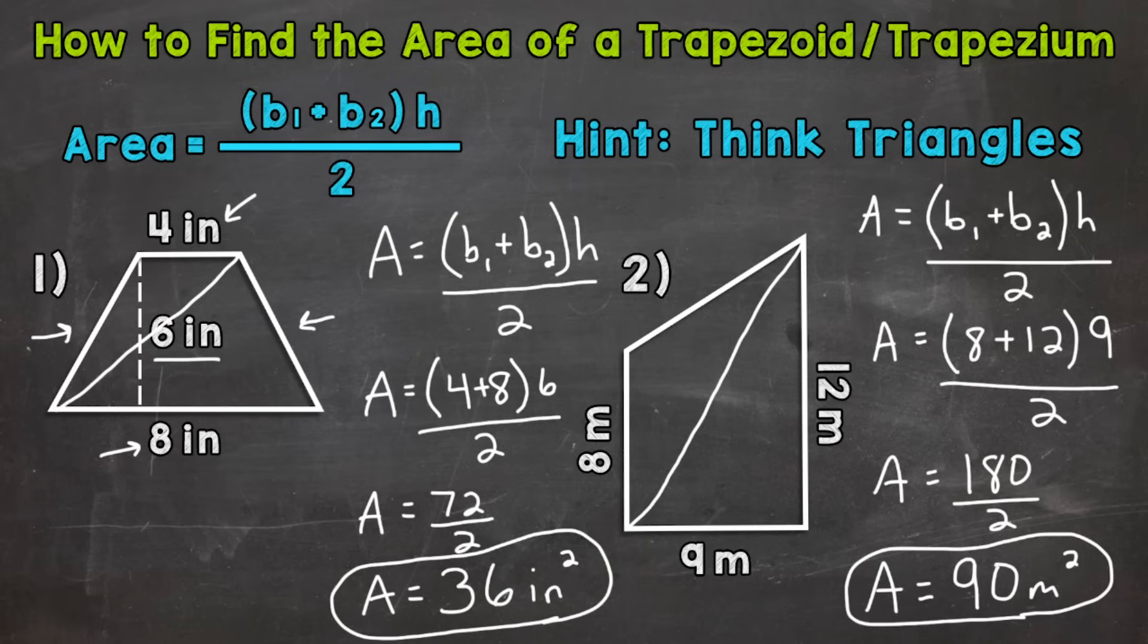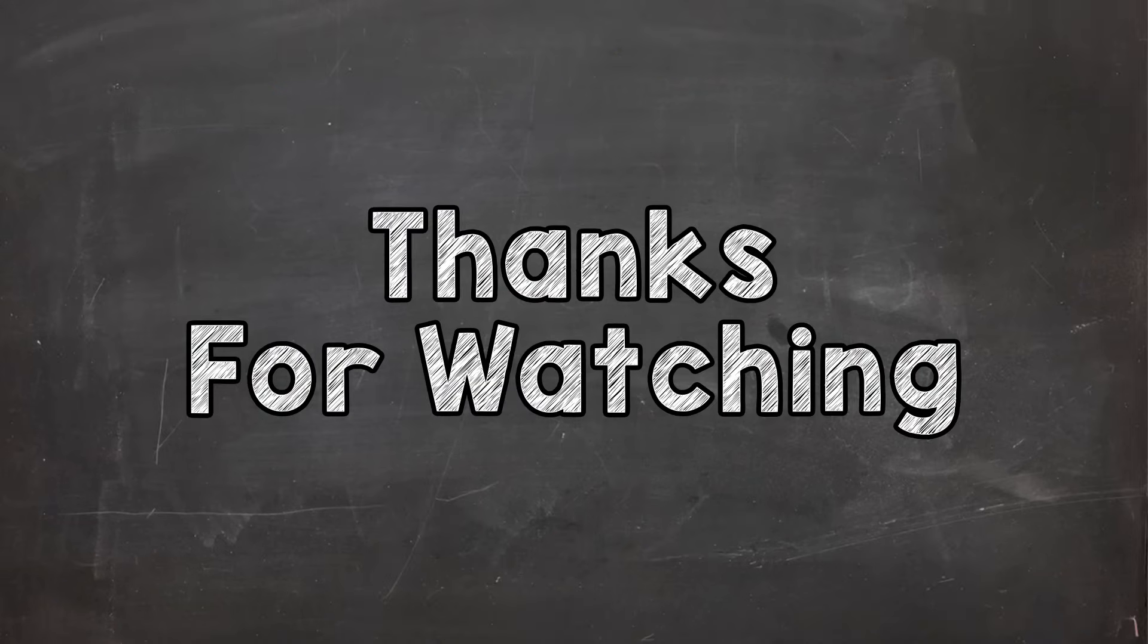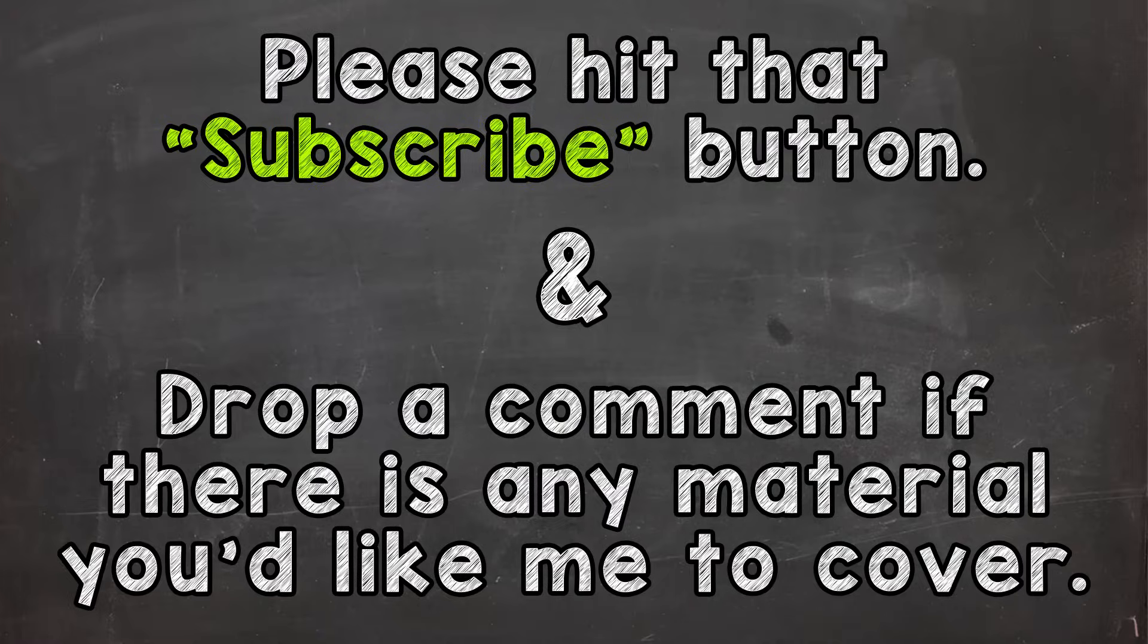Now, again, you can go from the top left to bottom right. It doesn't matter which way you split that trapezoid. It'll give you two triangles. So there you have it. There's how you find the area of a trapezoid. I hope that helped. Thanks so much for watching. Until next time, peace.